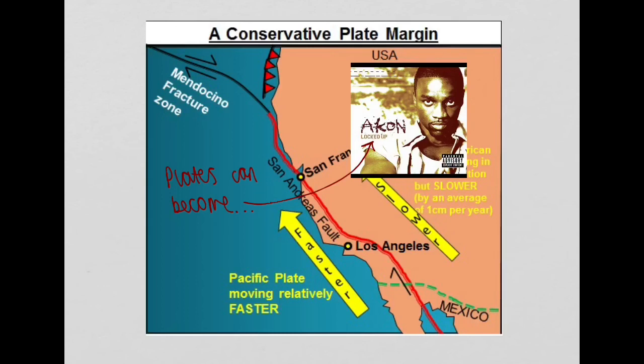Over time, a build-up of pressure occurs, which when released sends strong seismic waves through the earth's crust, causing very strong earthquakes. A good example of this boundary is the San Andreas Fault, as you can see in front of you, whilst a good example of an earthquake occurring on this boundary would be the Christchurch earthquake of 2011.